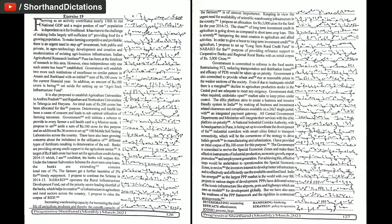It is also proposed to establish agriculture universities in Andhra Pradesh and Rajasthan and horticulture universities in Telangana and Haryana. An initial sum of Rs. 200 crore has been allocated for this purpose.